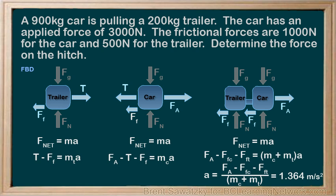Now that we have the acceleration of the system, we could solve for the hitch force T using either one of the other free body diagrams. Let's try it using the trailer's free body diagram. Let's just plug in our A for the acceleration and solve for T and we get 773 newtons.